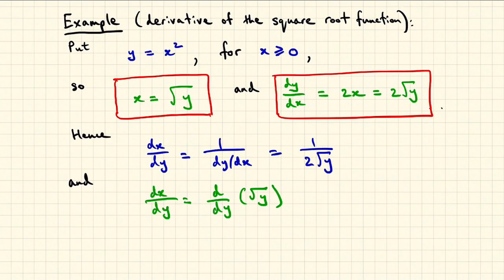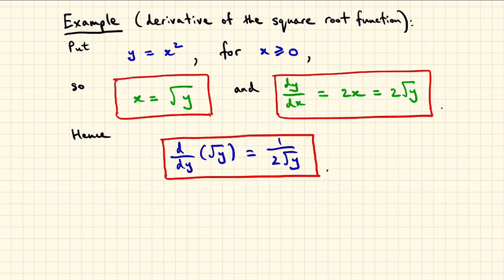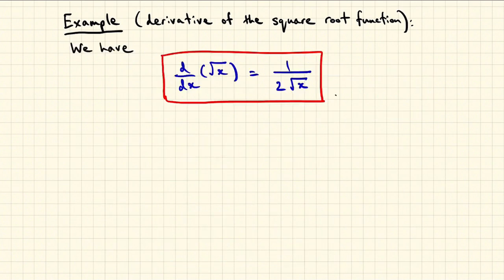But dx dy is just d dy of the square root of y, so we can express everything in terms of y. We now revert to using the symbol x as a typical input, so that d dx of the square root of x is 1 over 2 times the square root of x. And so we discover that to differentiate the square root of x, you just double it and reciprocate, not something you're ever likely to guess.